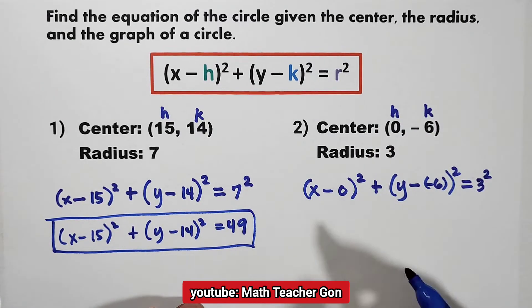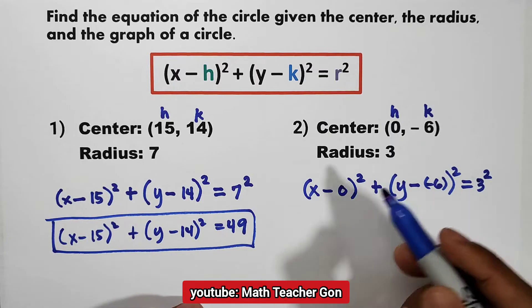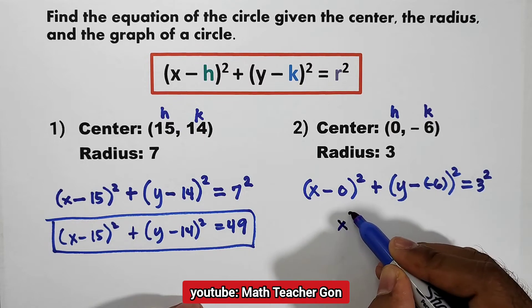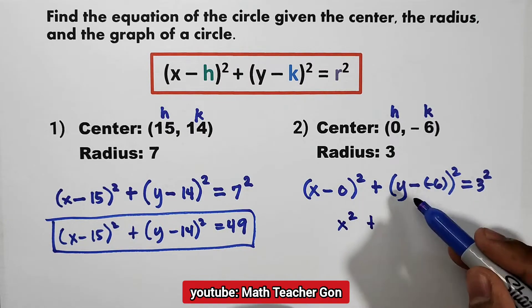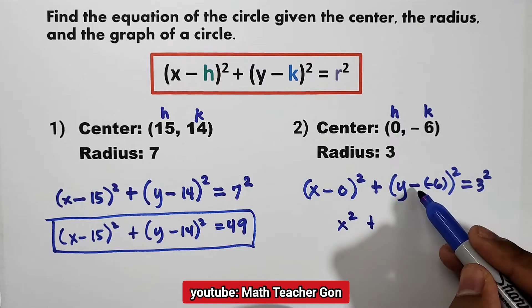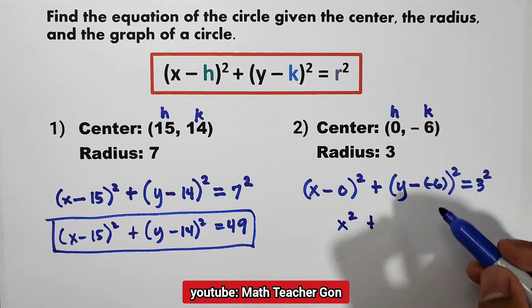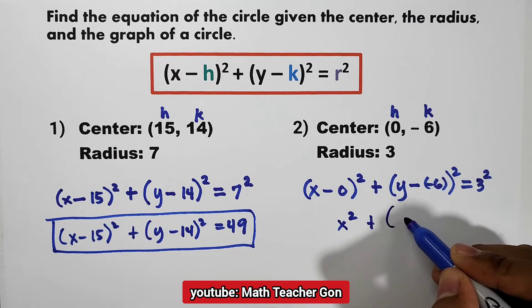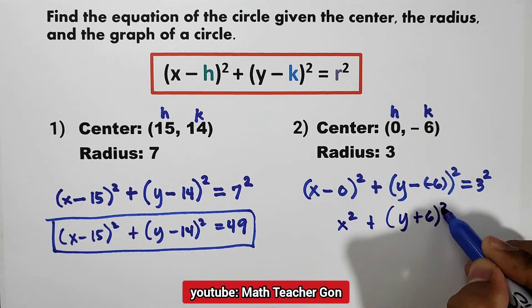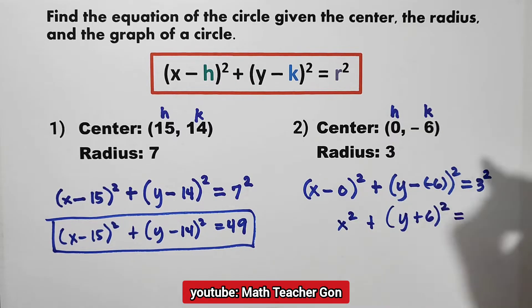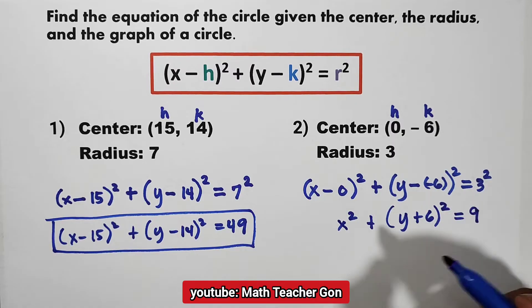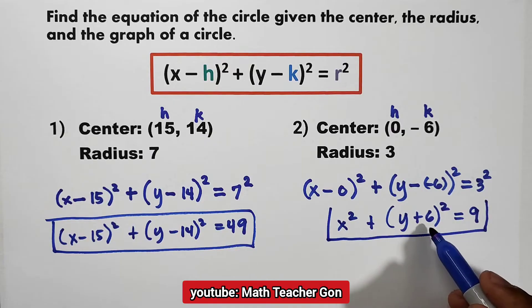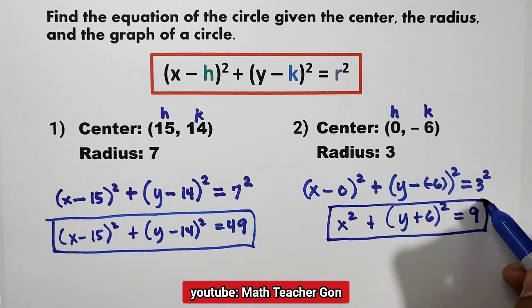So 3 squared. Now, x minus 0 — we remove the 0. We have x squared plus y minus negative 6. Negative times negative is positive, so we have y plus 6 squared equals 3 squared, which is equal to 9. So our equation is x squared plus the quantity of (y plus 6) squared is equal to 9.